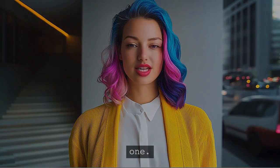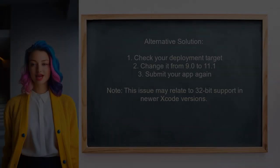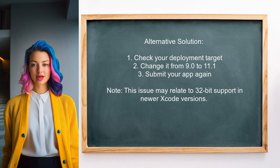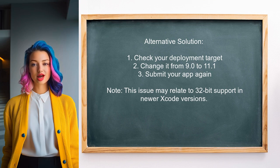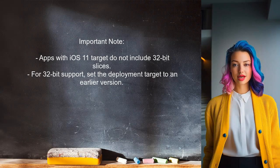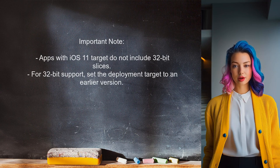Let's explore another solution. An alternative answer suggests that error ITMS-9207 can occur if your app's deployment target is set incorrectly. They found that switching the deployment target from 9.0 to 11.1 resolved the issue. The user also points out that apps targeting iOS 11 no longer build a 32-bit slice — so if you need 32-bit support, set the deployment target to an earlier version.